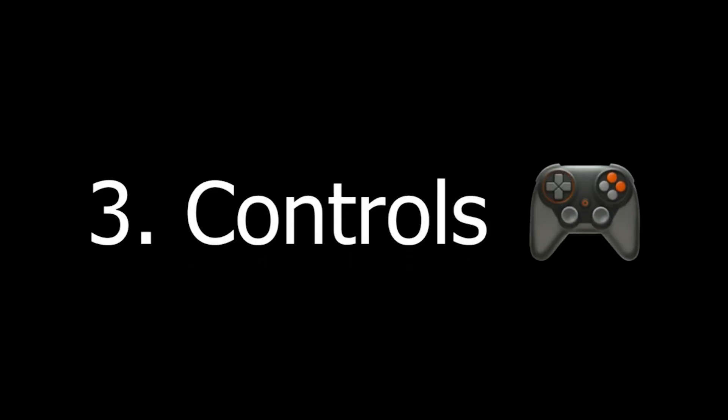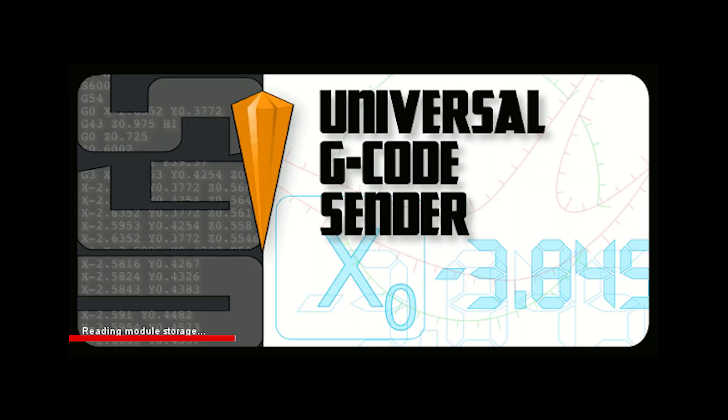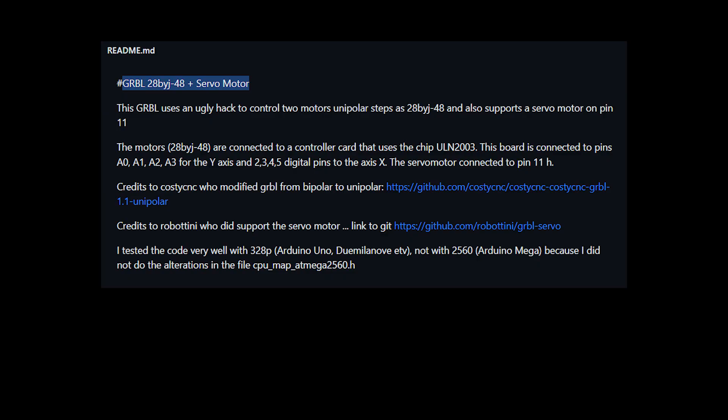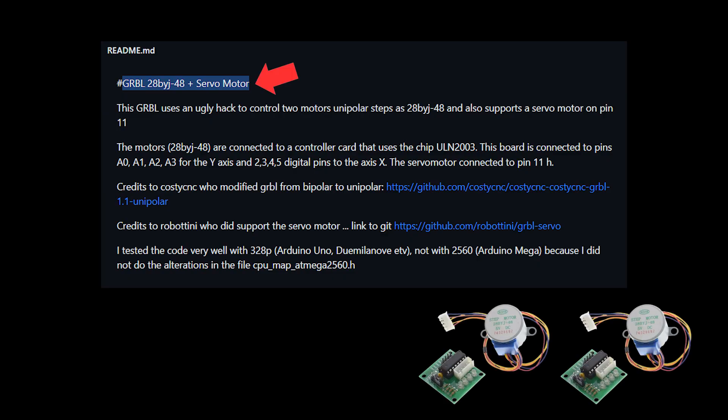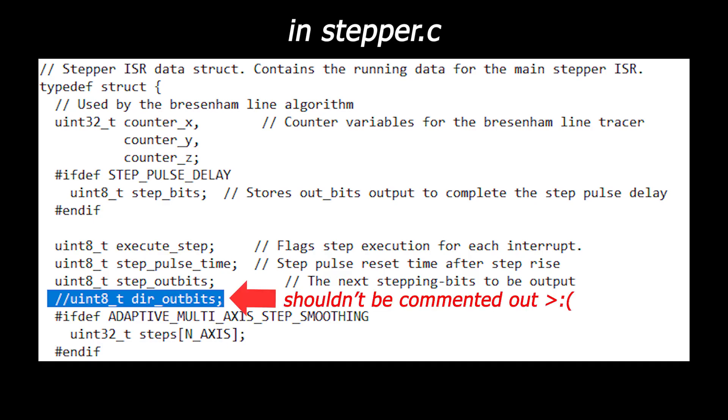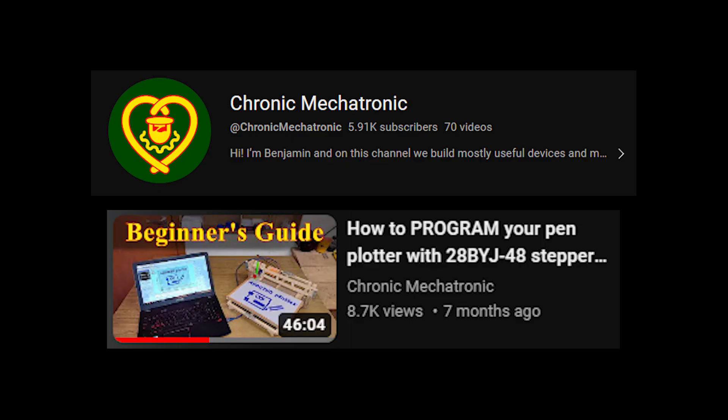I was hoping the controls would be as easy as downloading a gcode sender and loading gerbil onto an Arduino, but nope. Actually, there's a custom flavor of gerbil specifically for the 28BYJ-48 stepper motors and 9g Arduino servo motor combo I was trying to use. Unfortunately, the current version of this available for download on GitHub had a line commented out that should not have been commented out, and I wouldn't have figured that out if I hadn't stumbled across the video by the Chronic Mechatronic on YouTube.